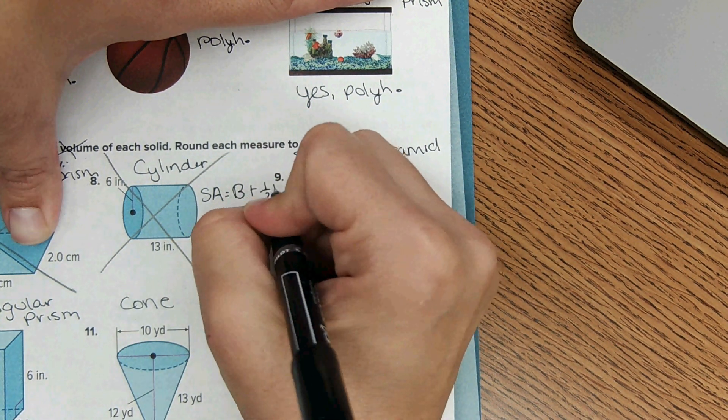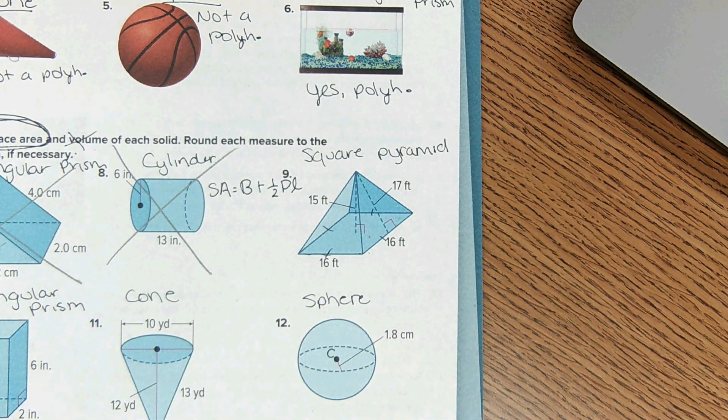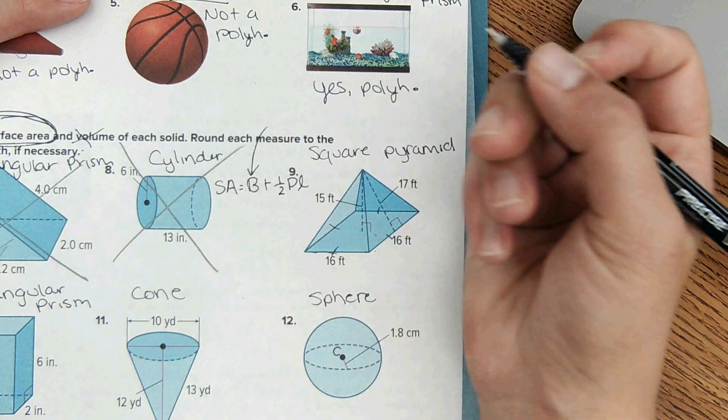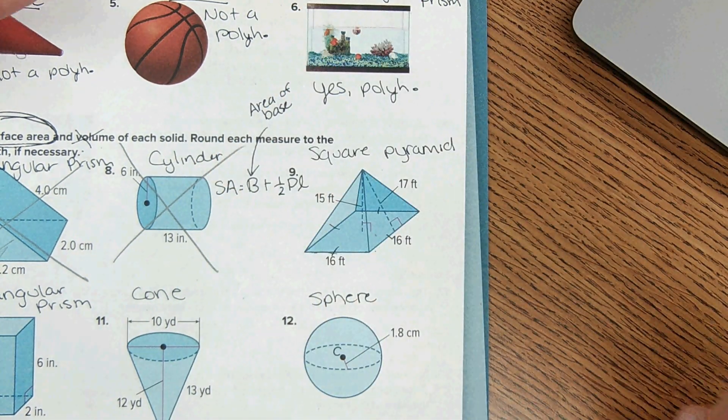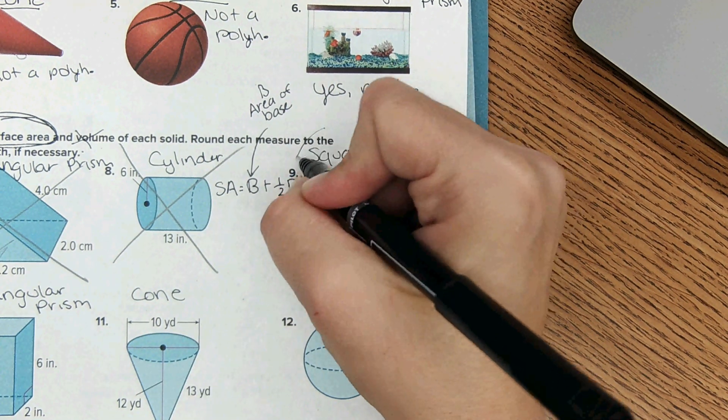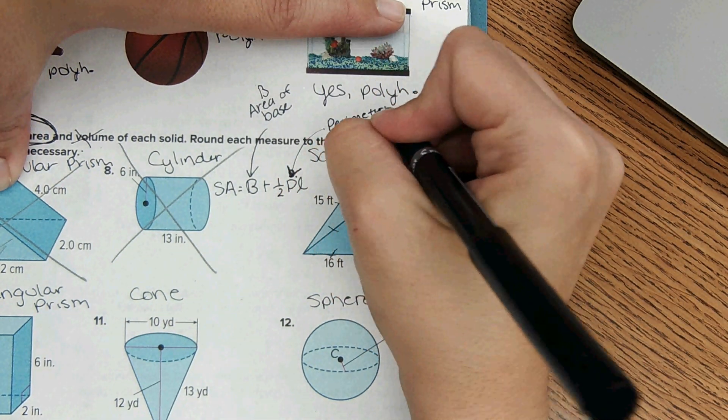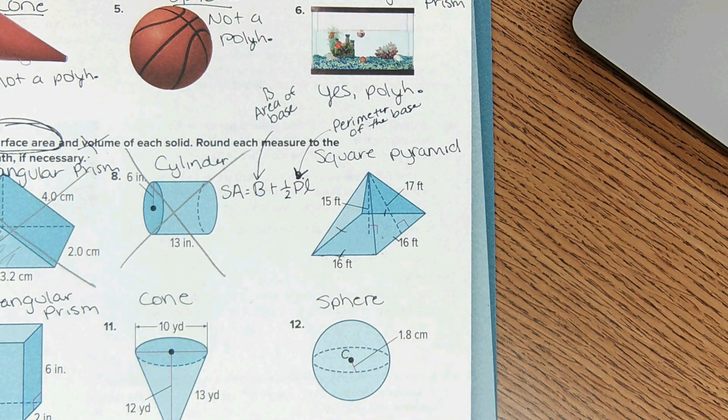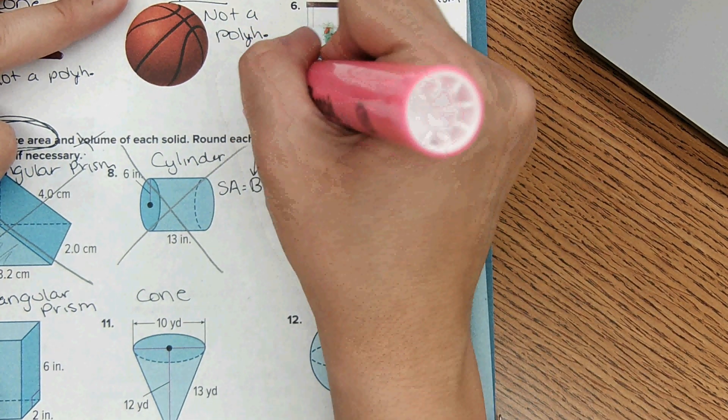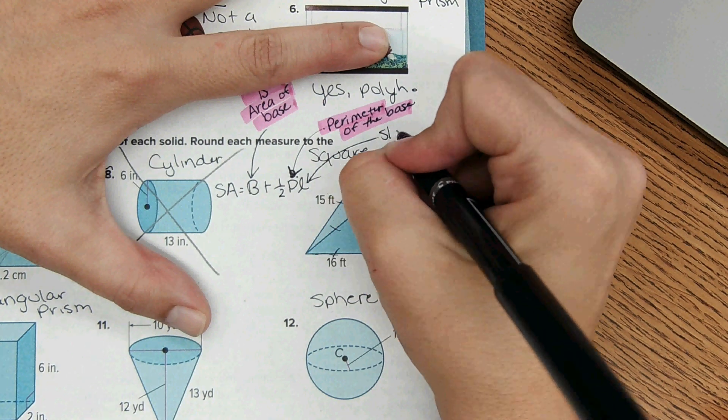That's the equation. You need to know what each part means though. So this right here, the capital B, just like with the other equations, area of the base. Capital B is area of the base. Then the P stands for perimeter, but specifically perimeter of the base. I think I should highlight this. Okay, so B is area of the base, P is perimeter of the base, and then L is slant height.